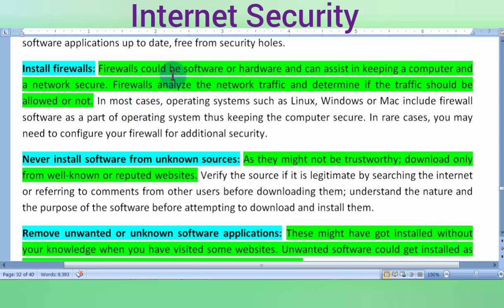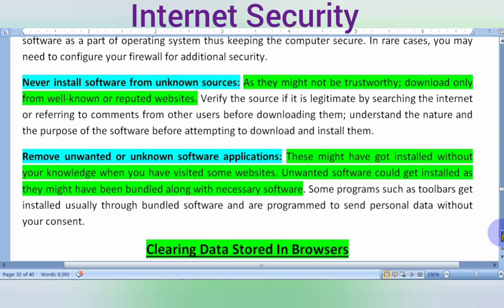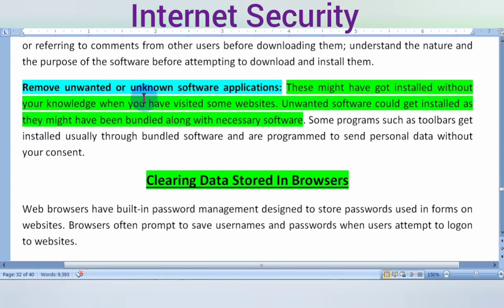Install firewalls. Firewalls can be software or hardware and assist in keeping a computer and a network secure. Never install software from unknown sources — only download from reputed, well-known websites, as not all websites are trustworthy. Also, remove unwanted or unknown software applications from your computer, and uninstall anything that is not required.